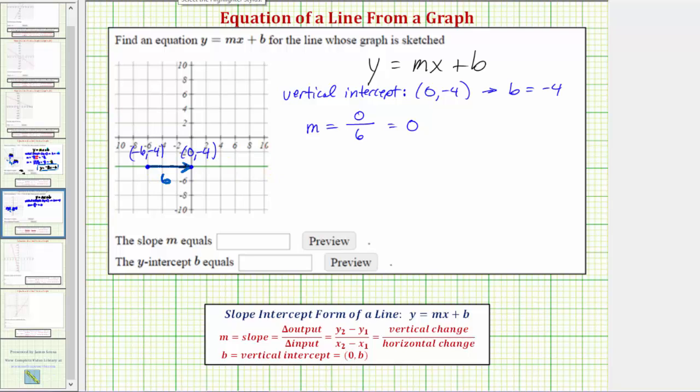The second method to determine the slope is to use this slope formula, where we can say the slope equals the change in output divided by the change in input. In our case, y is the output variable and x is the input variable. So the slope equals the change of y divided by the change of x, where the change of y is y sub two minus y sub one, and the change in x is x sub two minus x sub one.